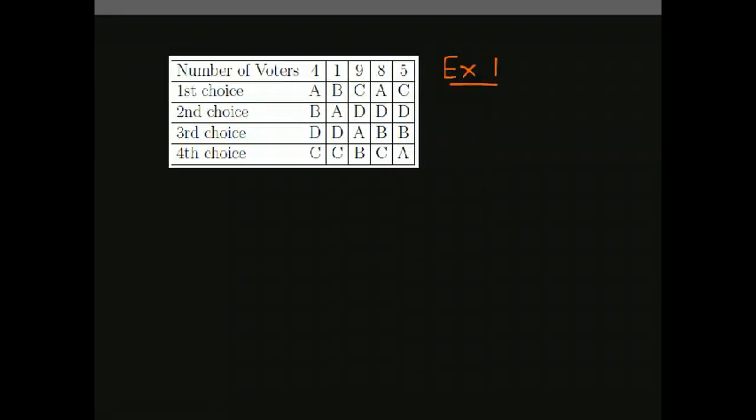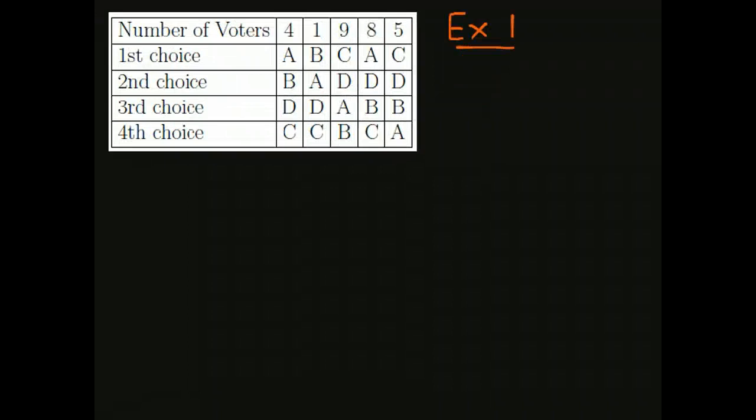So in example one, we're going to go back to the last section where we had the members of the Tasmania State University soccer team having an election choosing the captain. And we're going back to actually the original statement where we have five again in this last column. Remember in the last section we changed that to three, but we're going to take that back to five again. And this time we're going to find the winner of the election using the method of pairwise comparisons.